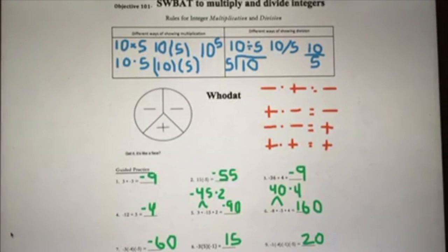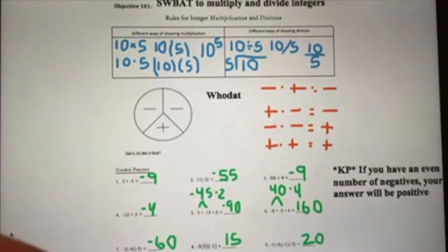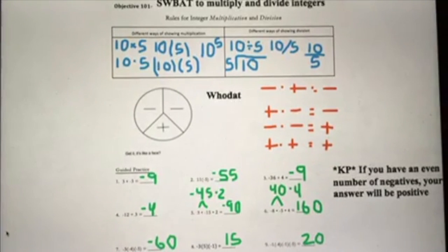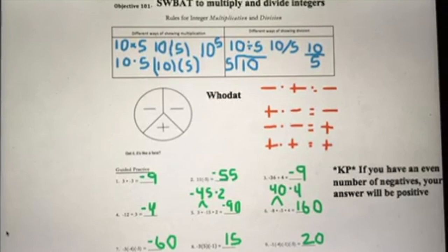One key point to add: when you're multiplying negatives, if you ever have an even number of negatives — like in number nine which has four negatives — if you have two, four, or six negatives, your answer will always be positive. Same idea: if you had an odd number of negatives — one, three, or five negatives — your answer would always be negative. That's a key point you should have down because it's going to be helpful in the future.